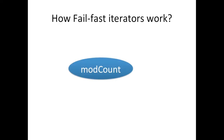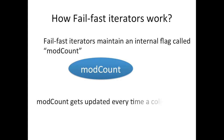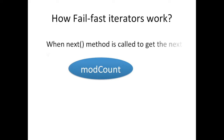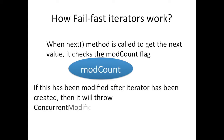Fail-fast iterators maintain an internal flag called mod count. This mod count gets updated every time a collection is modified. When the next method of the iterator is called, the next value is returned, but at the same time it also checks the mod count flag. If this flag has been modified after the iterator was created, it will throw a ConcurrentModificationException.